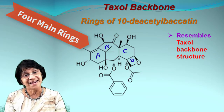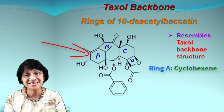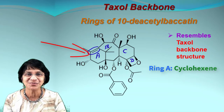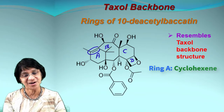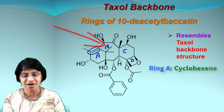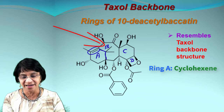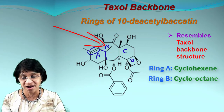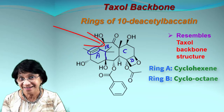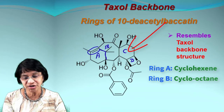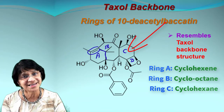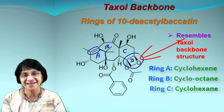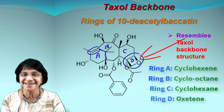Ring A is called cyclohexene — it is hexene because there is a double bond, making it an alkene, and hexa stands for six carbon atoms. Ring B may be a little difficult to visualize, but if you look carefully, it has eight carbon atoms — octa — so it is cyclooctane. Ring C is a six-membered ring, so it is a cyclohexane ring. Ring D is a special one — it's only four-membered and it contains oxygen, so it's called an oxetane ring.